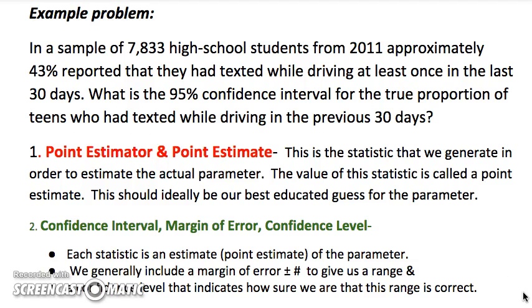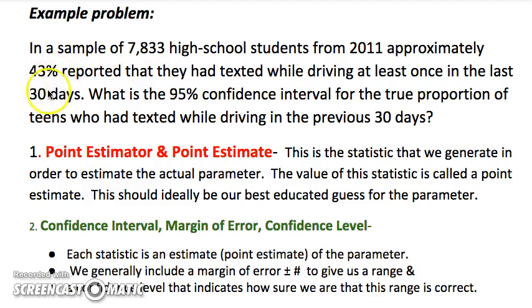Here's an example problem we're going to use as we first explore sample proportions. In a sample of 7,833 high school students from 2011, approximately 43% reported that they had texted while driving at least once in the last 30 days. So that's 43% from the sample — that's our statistic. We'll talk about that as being a point estimate in this confidence interval chapter. We want to know the 95% confidence interval for the true proportion of teens who had texted while driving in the previous 30 days.